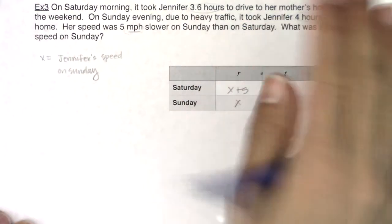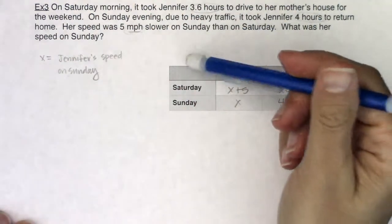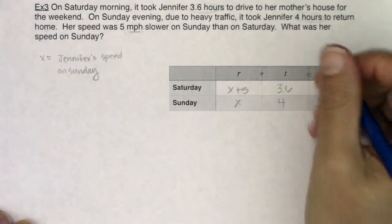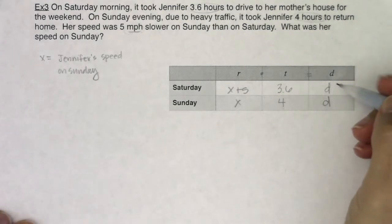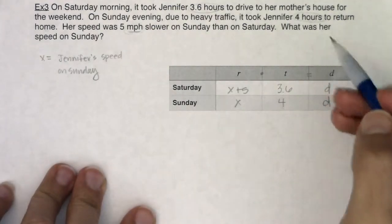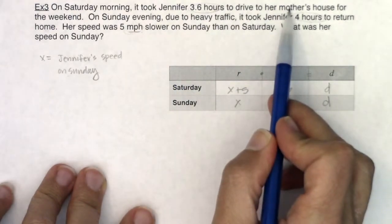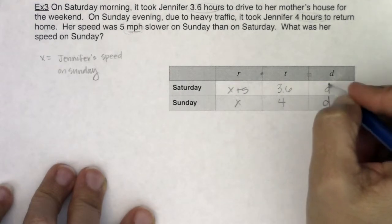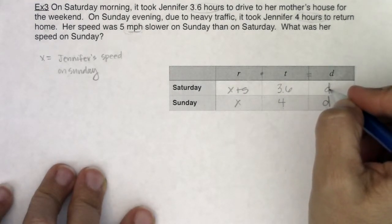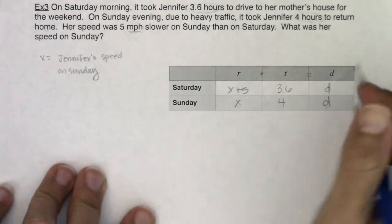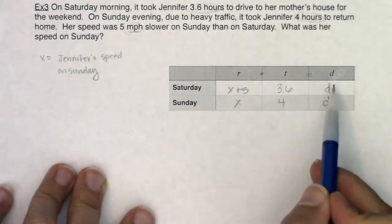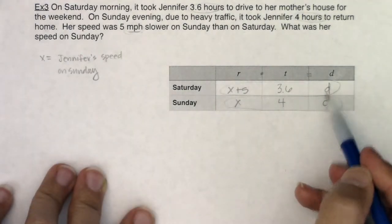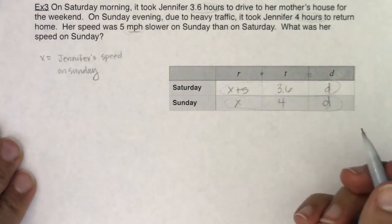Nowhere in the problem did it give me a specific distance — nothing like 'Jennifer lived 22 miles from her mom's house.' So I have to leave distance as a variable. But here's the key insight: the distance from Jennifer's house to her mother's house is the same as the distance back. So both distance cells must be equal to each other. I have two variables — D and x — but I also have two equations, one for each row.